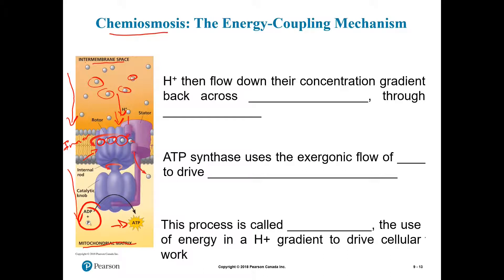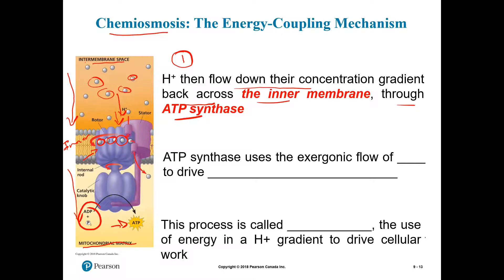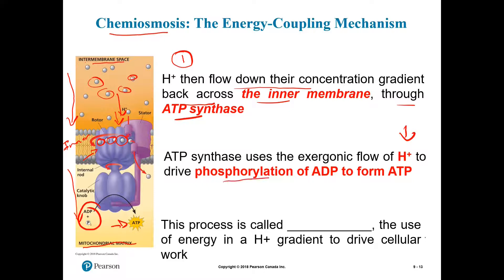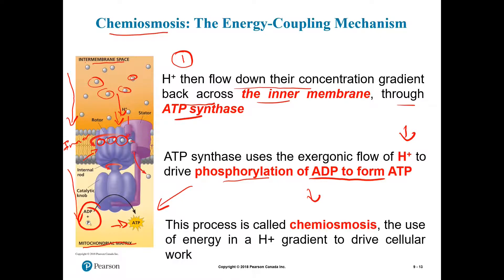Let's recap the three concepts that we study in this slide. Hydrogen ions flow down their concentration gradient back across the inner membrane through the ATP synthase. The ATP synthase uses the exergonic flow of protons to drive the phosphorylation of ADP to form ATP. And finally, this process is called chemiosmosis, that is the use of energy, in this case of hydrogen protons, to drive the cellular work. This is the third important concept about the process of chemiosmosis.